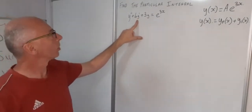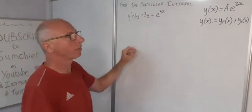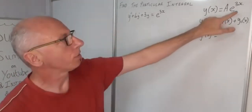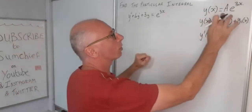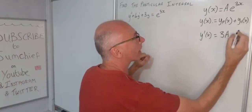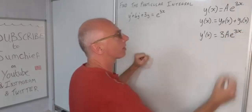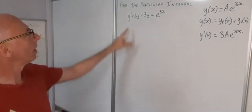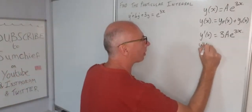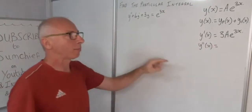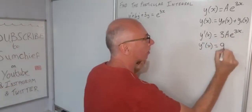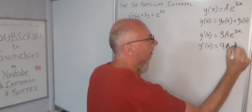We take the first derivative because we have a derivative term multiplied by 4. So y'(x): taking the derivative, the 3 comes down to give us 3a, and the input stays the same, giving us 3a·e^(3x). Now we need the second derivative. Taking the derivative again, we multiply by 3 once more, giving us 9a·e^(3x).